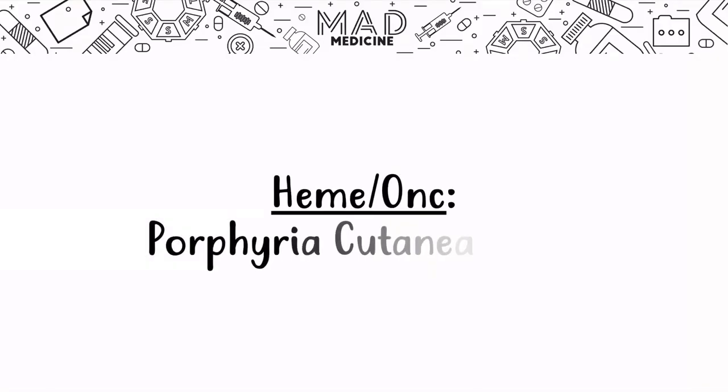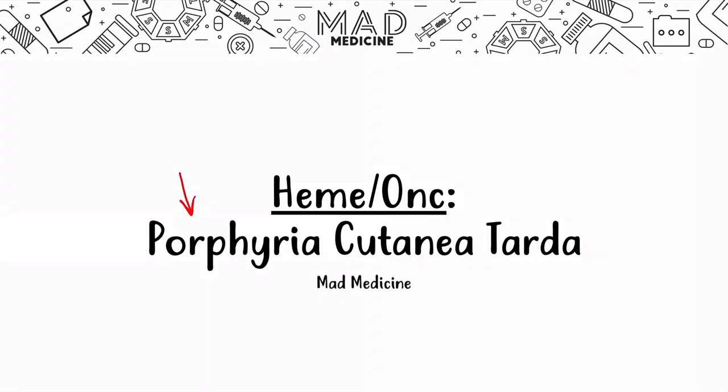Welcome back to Mad Medicine. In this lecture, we're going to be discussing Porphyria cutanea tarda. We've already discussed acute intermittent porphyria, so if you haven't watched that video, go to our YouTube channel — YouTube forward slash Mad Medicine — and there you can find the acute intermittent porphyria video in a playlist titled Hemonc for the Step 1.